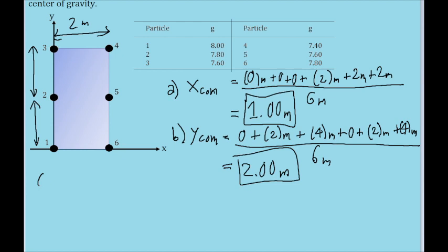Now parts c and d ask for the center of gravity. Now normally, in most cases, the center of gravity is the exact same place as the center of mass, but because our g's are all funked up, that's not going to be the case, and we'll have to do the math to figure out what it's going to be.